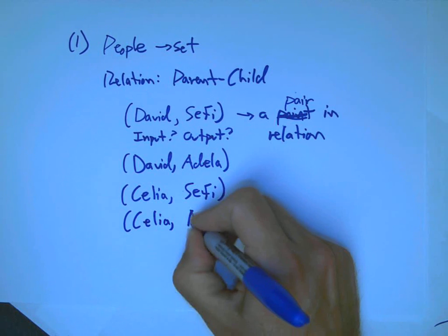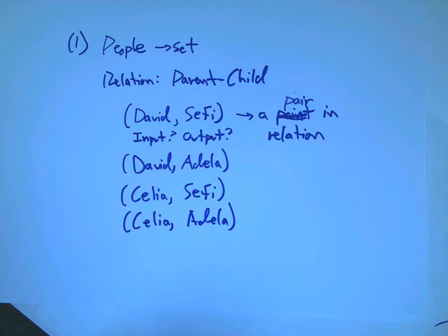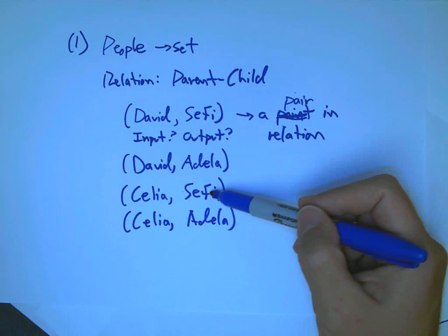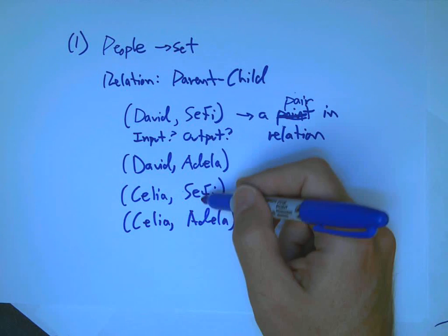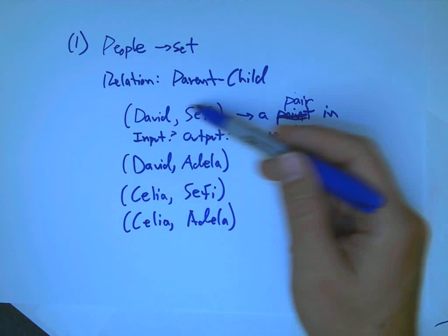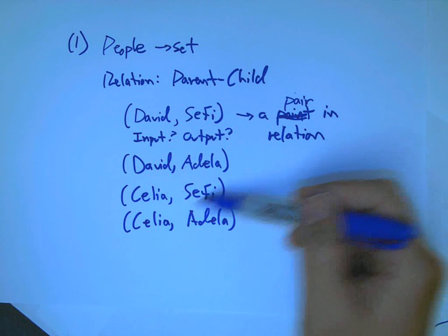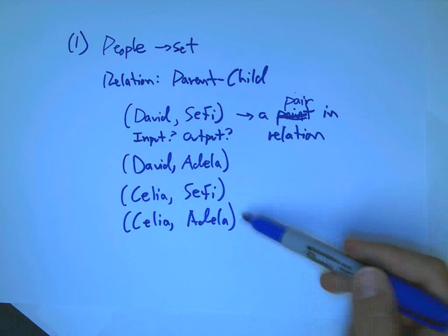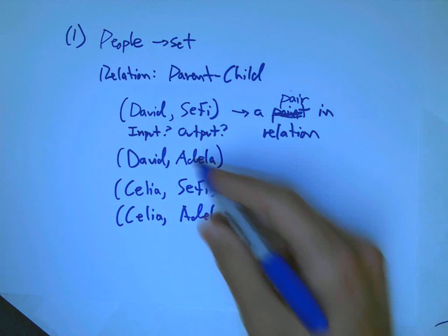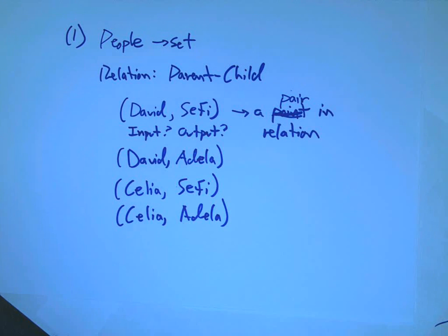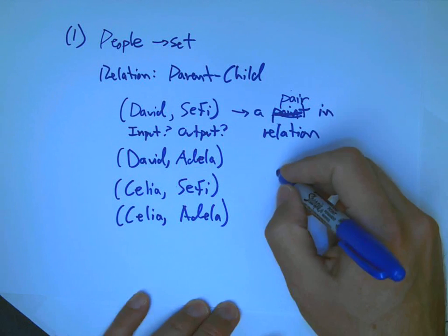My wife's name is Celia, and there's some other pairs. Celia is the parent of Sephie. Celia is the parent of Adela. And so, either way you do it, each parent has more than one child, and each child has more than one parent. And so, it's not something you could make into a function either way, even if you tried to switch inputs and outputs.